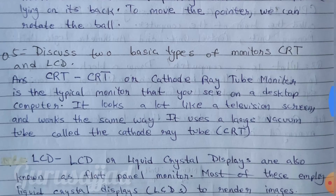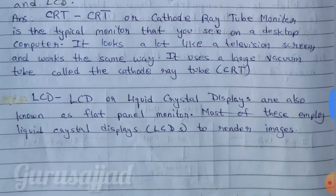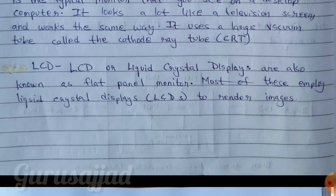Question number 5: Discuss two basic types of monitors — CRT and LCD. CRT, cathode ray tube monitor, is the typical monitor that you see on a desktop computer. It looks a lot like a television screen and works the same way, using a large vacuum tube called the cathode ray tube. LCD, or liquid crystal displays, are also known as flat panel monitors. Most of these employ liquid crystal displays to render images.